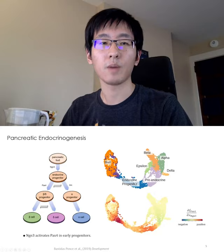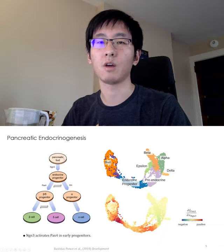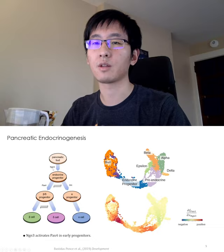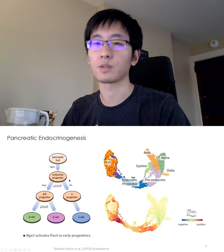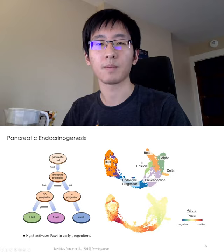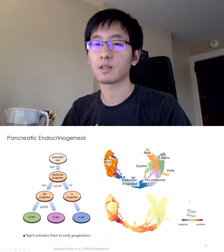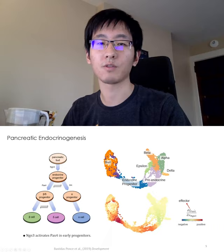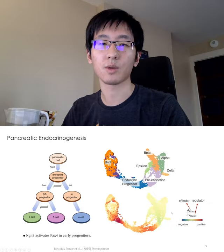By looking at the sign of the Jacobian of the vector field, we can infer the sign of regulation between genes. Here is a Jacobian analysis on a real data set of pancreatic endocrinogenesis. It is known that NGN3 gene is an inducer of the differentiation of pancreatic blood cells, which would then become endocrine progenitors. Here is the 2D UMAP embedding of the data. The blue cells are the endocrine progenitors, and the orange ones are the pancreatic blood cells. PAX4, which acts as the effector here, is a gene involved in the regulation of the differentiation process in progenitors. This Jacobian with respect to the regulator NGN3 is positive, suggesting that NGN3 initiates pancreas differentiation by activating PAX4.